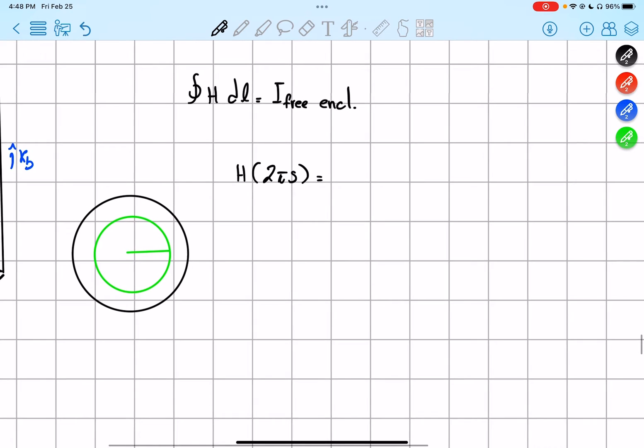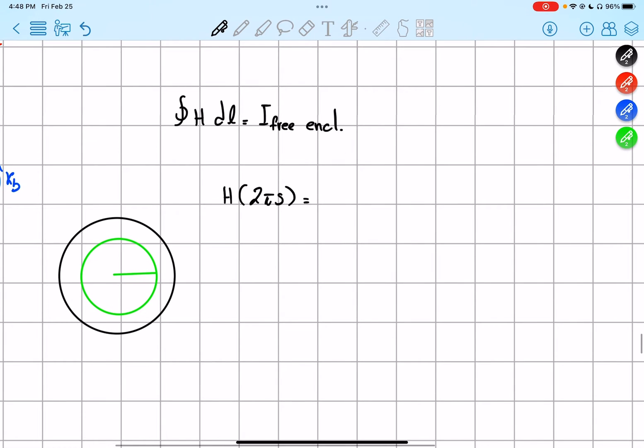What is the current free enclosed? Well in this case it's gonna be equals to the current, sorry, the area that we have at the center, so the current times the area at the center, so π s squared, because our radius is s, over the total radius of our rod, so π r squared, if we said that the radius of our rod is r.